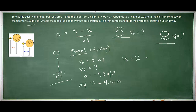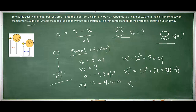If you decided to use the kinematic equation v² = v₀² + 2aΔx to calculate the final velocity, then you are correct. We'll go ahead and plug in the values. After calculating the final velocity, you should have obtained a value of negative 8.85 meters per second. Your calculator might have returned a positive value, but because the ball is falling downward, its final velocity must be negative. So we label the final velocity of the ball right before it hits the ground as negative 8.85 meters per second.